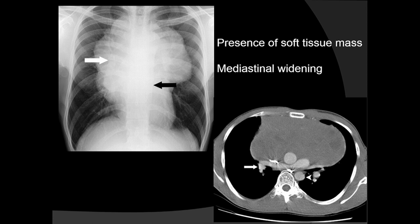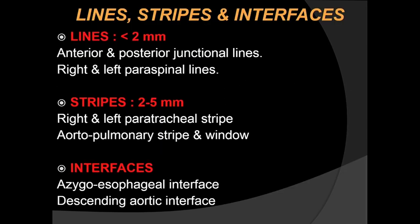For these obvious lesions on the chest radiograph there is no doubt, but when there are subtle signs, we must look at the anterior and posterior junction lines, the right and left paraspinal lines, the right and left paratracheal stripe, the aortopulmonary stripe and window, and a few interfaces. I'll show you examples of these as we go along because it is important to know them.